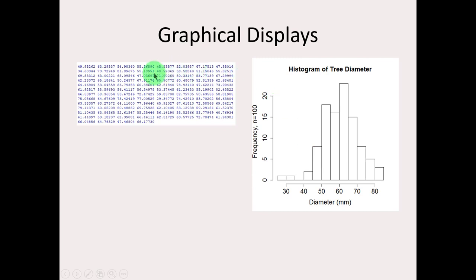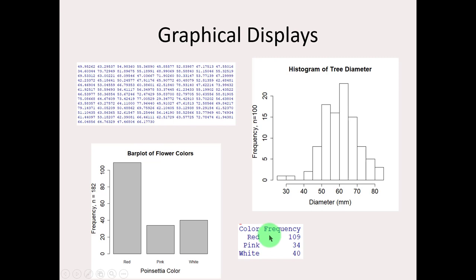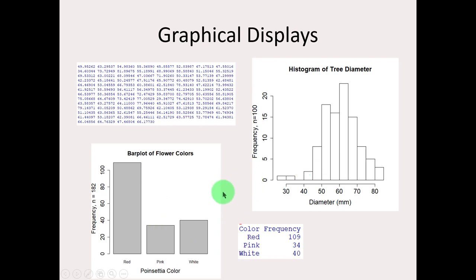Here I've displayed a swath of numbers that appear to be continuous — there are decimals, this is randomly generated information, and you could make a graph with this data. Over here this would be categorical data where there are categories that have been counted up. These are two different kinds of graphs that accomplish a similar task, but the type of variable observed determines the analysis done. This is called a histogram and it applies to quantitative data, and this is a bar plot which applies to categorical data.